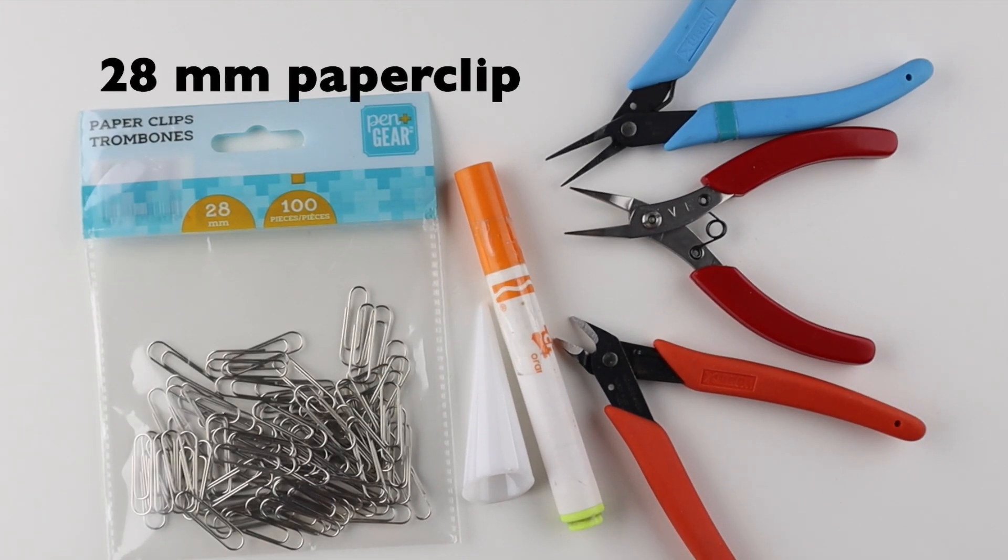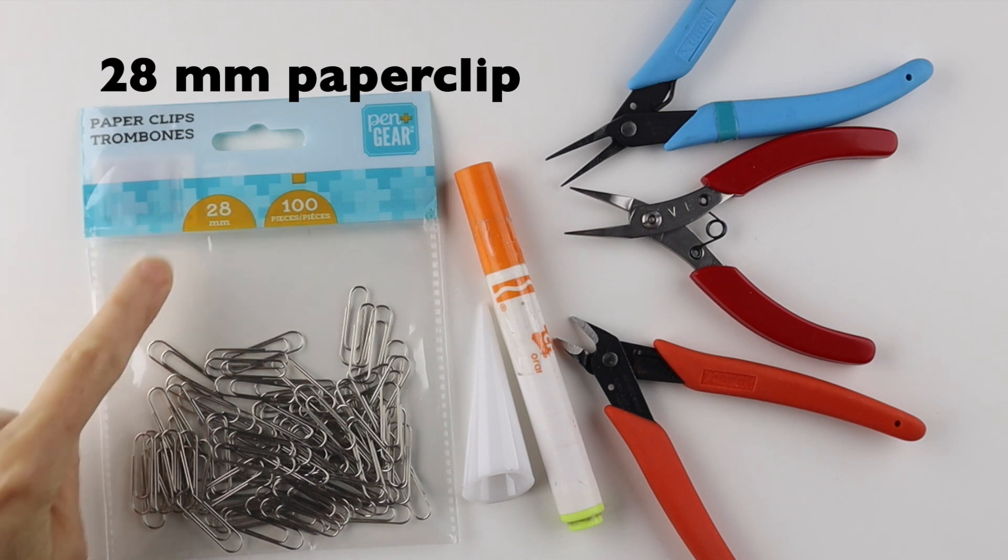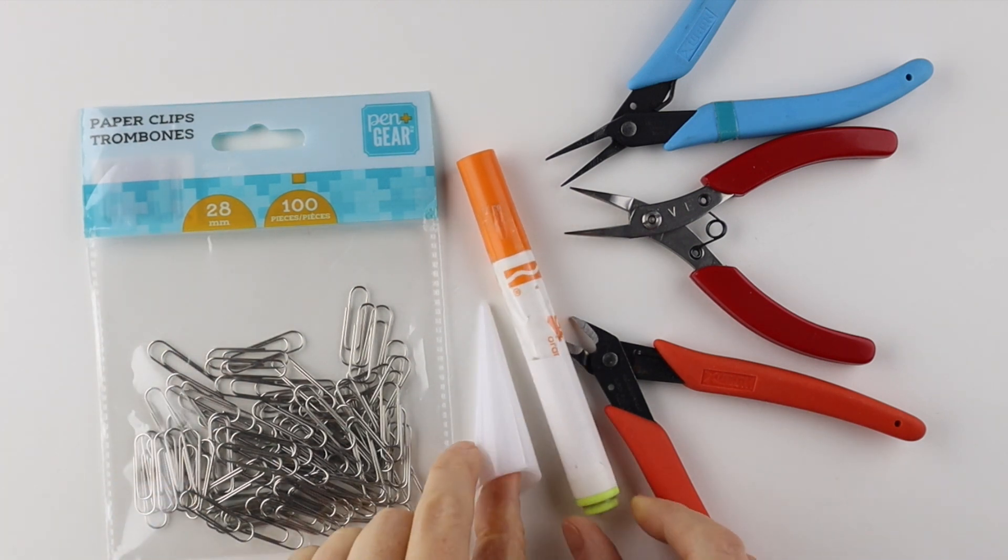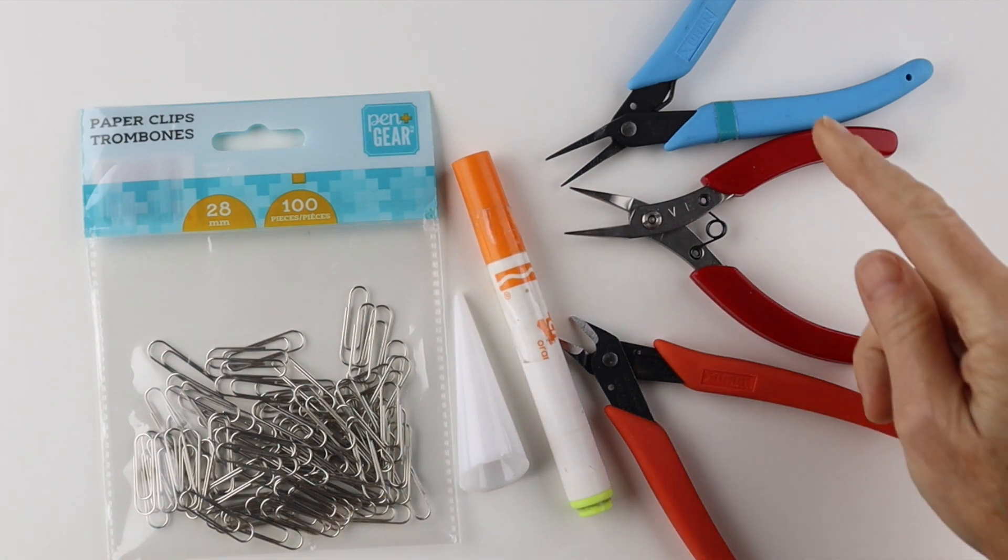For the paperclip rings, I use the 28mm regular sized paperclip. You need a round form, so a marker or a ring cone, and your tools.